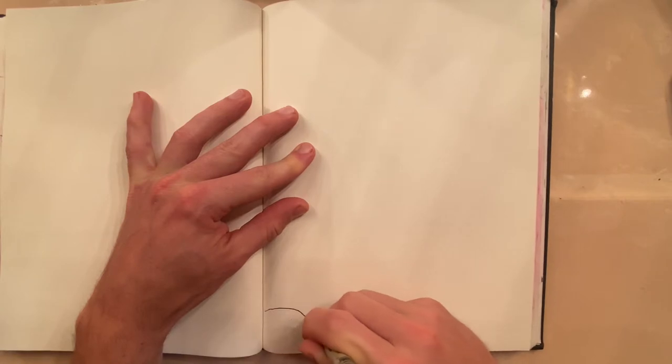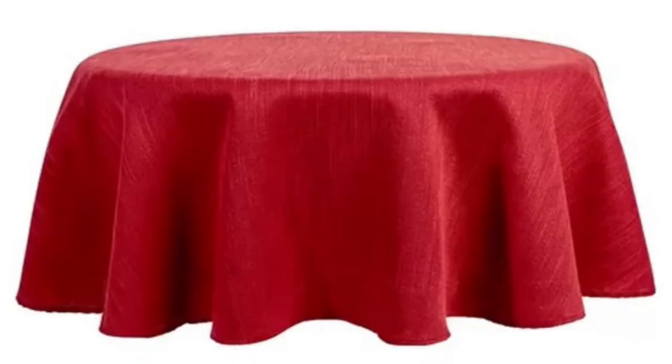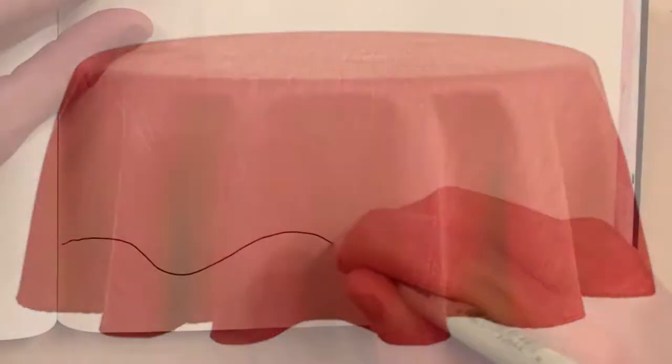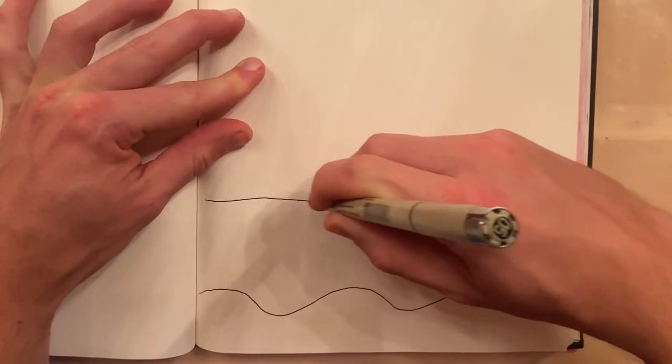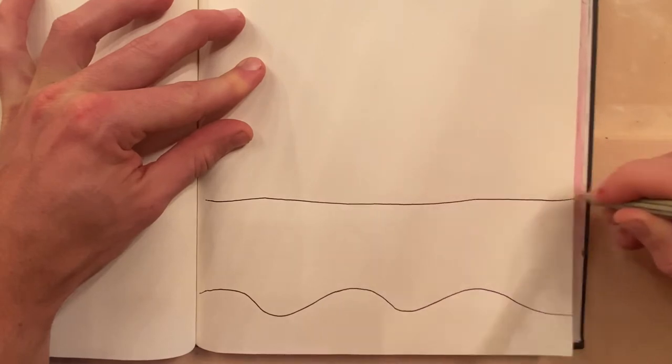Start off by drawing a tablecloth towards the bottom of the page. Put some ruffles in the bottom of the tablecloth and then a straight line at the top where the cloth folds onto the top of the table. Something like that.